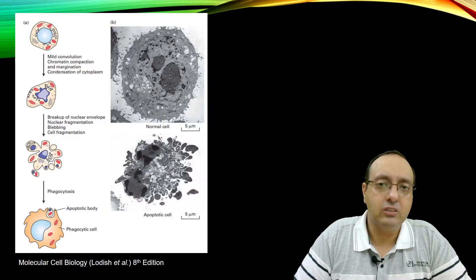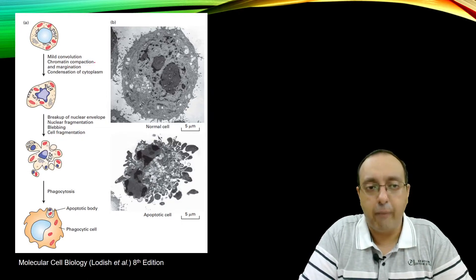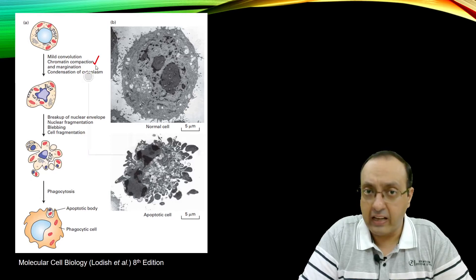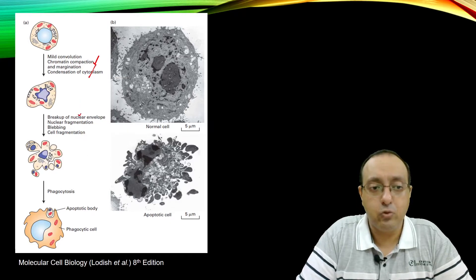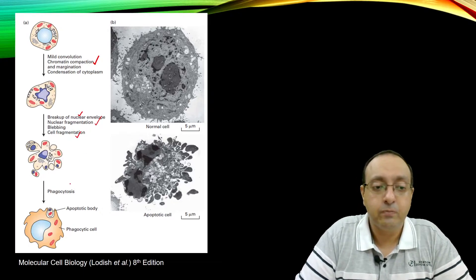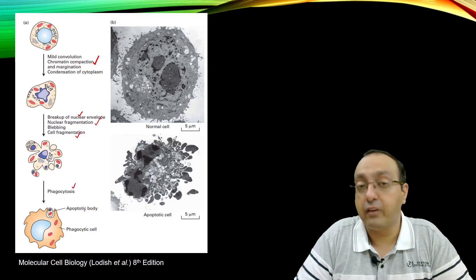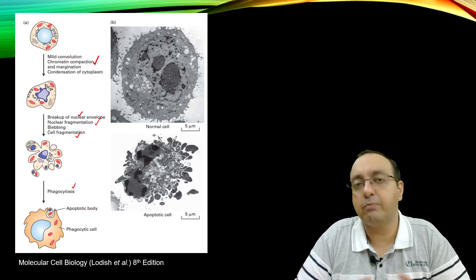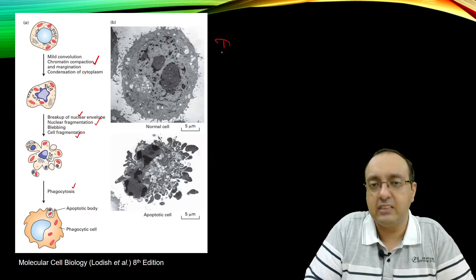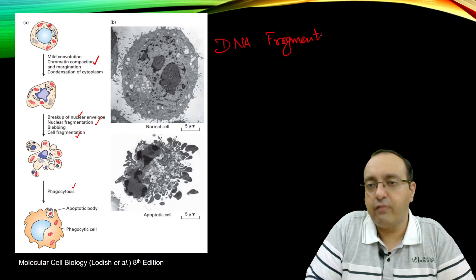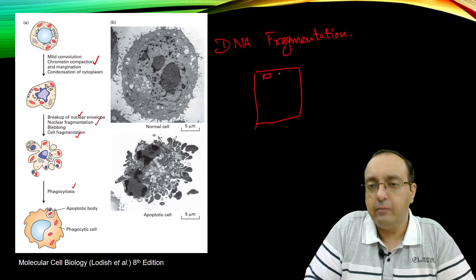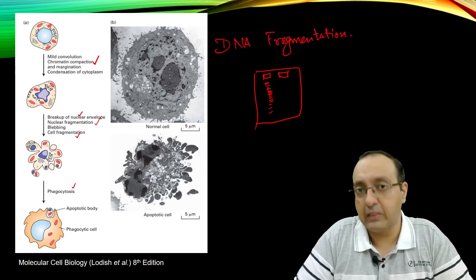Some of the conditions that happen during apoptosis include chromatin compaction, condensation of cytoplasm, breakup of the nuclear envelope, nuclear fragmentation, and cell fragmentation, followed finally by phagocytosis by phagocytic cells. Another interesting phenomenon is intensive DNA fragmentation — apoptotic cells were found to produce a laddering effect when their genomic DNA was analyzed, showing a huge ladder pattern.